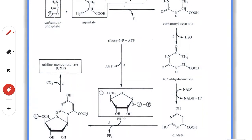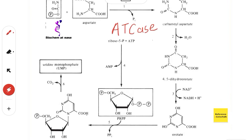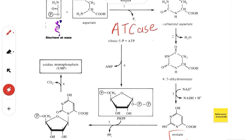The dihydroorotate molecule is then oxidized by NAD⁺ to form orotate. Orotate is a pyrimidine nitrogen base, but it is non-physiological and is not incorporated into nucleic acids. This oxidation of 4,5-dihydroorotate to orotate is catalyzed by the enzyme orotate dehydrogenase.